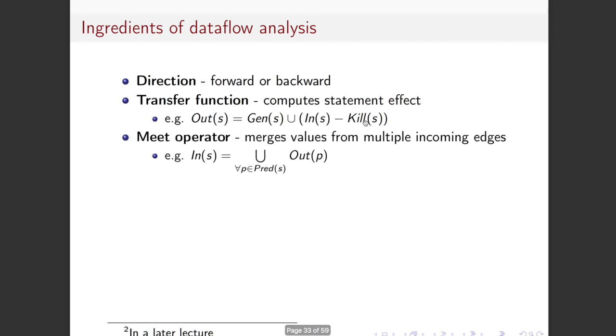All right. You have a meet operator, which merges the values coming in from multiple edges. And the example that we saw up there was that the In set is calculated across all predecessors and unioning them for the Out edges from the Out edges that we've got. You will see people use intersections. And if it's a forward dataflow analysis, it won't be over the predecessors, it'll be over the successors. And sometimes there aren't unions there for weirder dataflows, there might be other things instead.